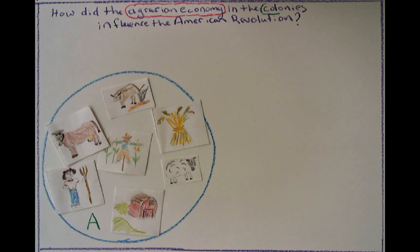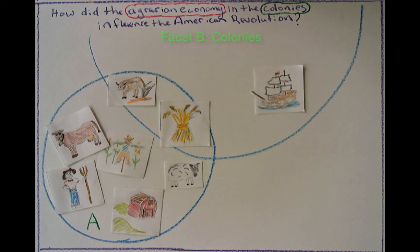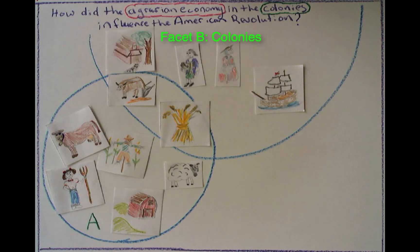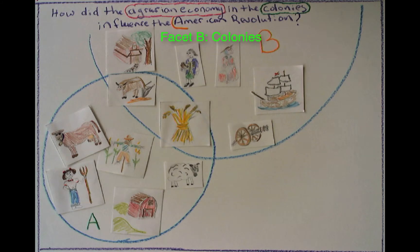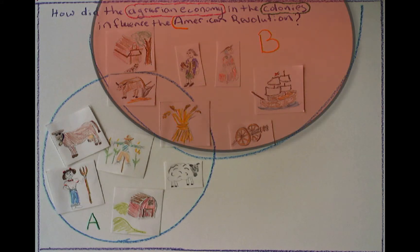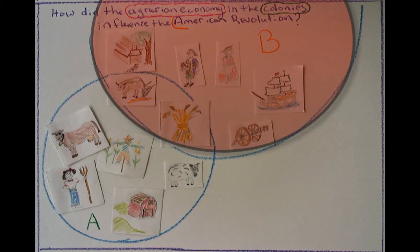The second big idea or concept is colonies. We'll draw a second circle around this portion of the database and label it Facet B, colonies, and populate the circle with sources representing the colonies. This part of the database is only about the colonies, this part is only about agrarian economy, but there's this overlapping part where both concepts — agrarian economy and colonies — are discussed.